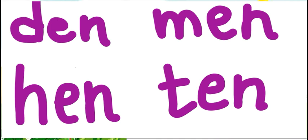Next is TEN — T-E-N. T you have to write in between three lines, from the red line to the blue line, and again E and N in between the two blue lines. Den, men, hen, ten — these four words you have to write twice in your English notebook, that is the four-line book.